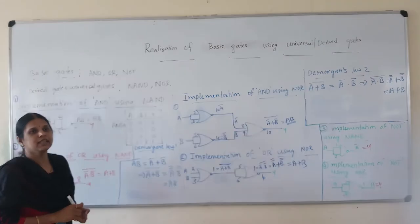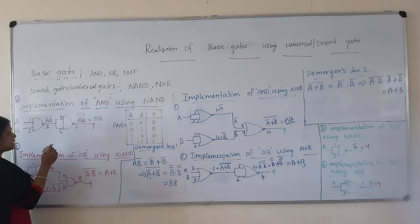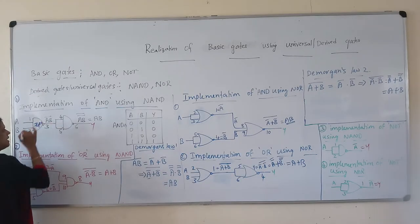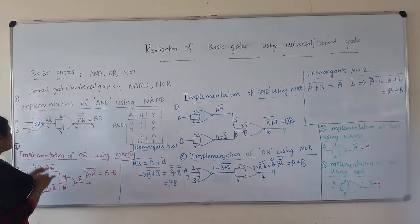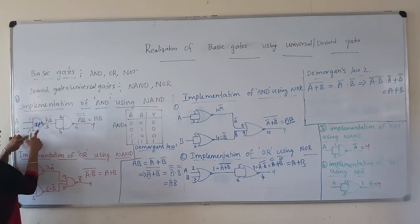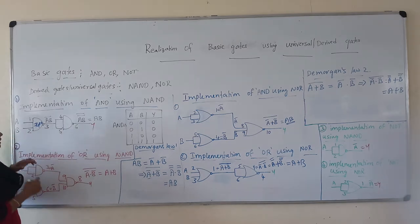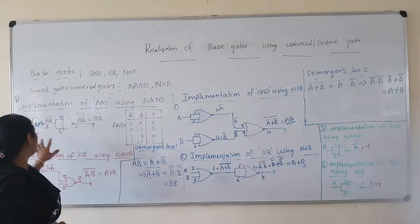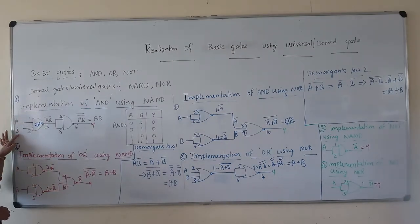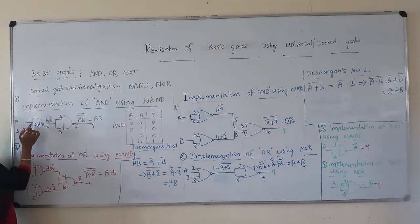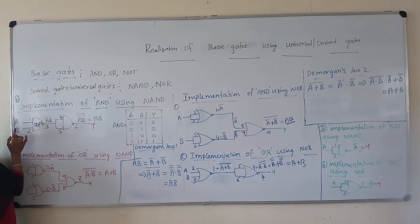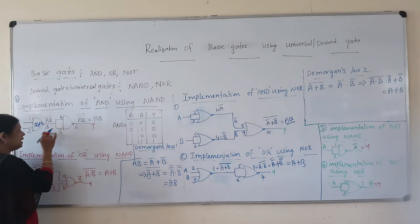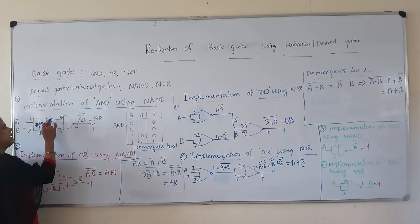We have already discussed the pin configuration of the NAND gate IC, which is the 7400 IC. In the 7400 IC, the first and second pins act as inputs and the third pin acts as an output. Since we are trying to simulate or derive a two-input AND gate, we use two external inputs A and B. The first input pin is given external input A, and the second pin takes external input B. From the third pin we get the intermediate result AB bar.